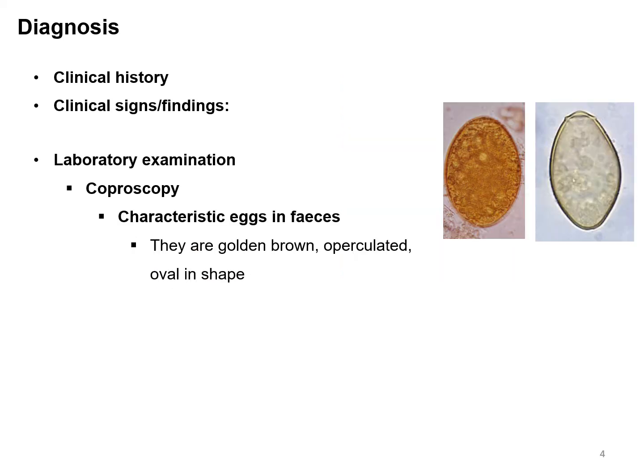Diagnosis of diphyllobothriosis is hard to confirm by clinical signs alone, but confirmatory diagnosis can be done based on coproscopy. During coproscopy, characteristic eggs can be found — these eggs are golden brown in color and operculated. They could sometimes be confused with the eggs of Fasciola, but the size of this egg is almost half the size of the Fasciola species egg.